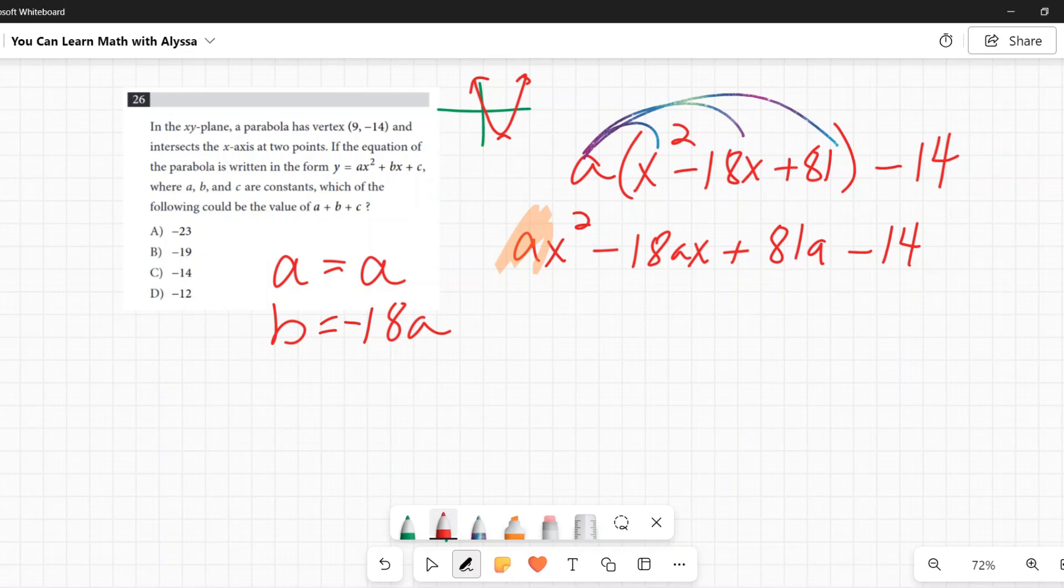So 81 times a is also a constant. 81a minus 14 is altogether a constant. So that's my c.